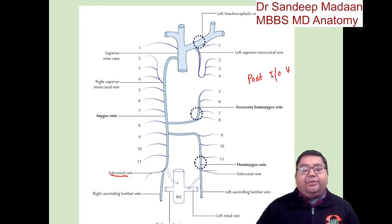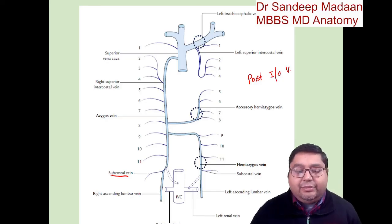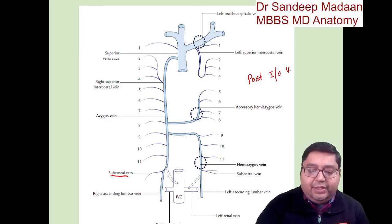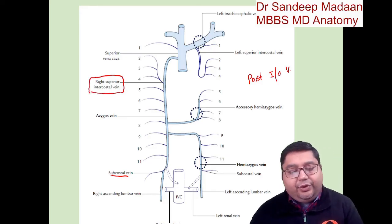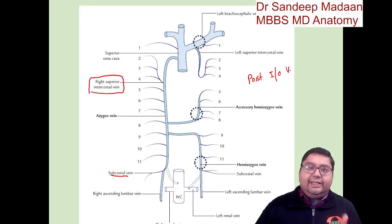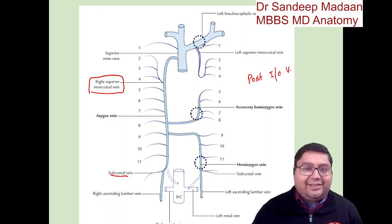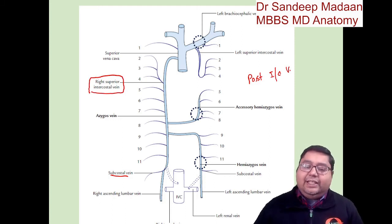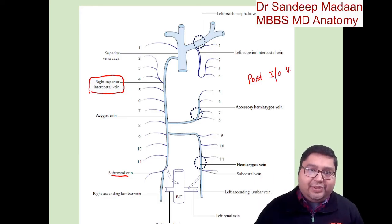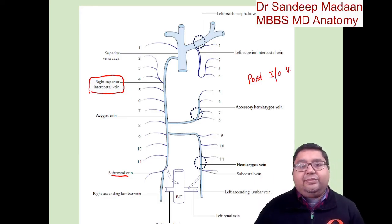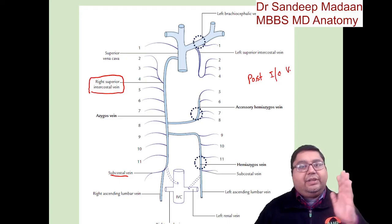Veins number 2, 3, and 4 merge together to make the superior intercostal vein. This is found on both the right and left sides, but the difference is in the drainage. On the left side it drains into the brachiocephalic, because veins 1 to 4 should drain into the brachiocephalic. On the right side, after the first vein, whatever comes goes into the azygous.